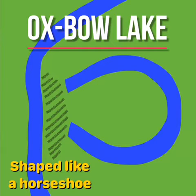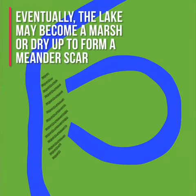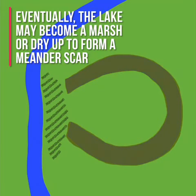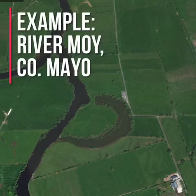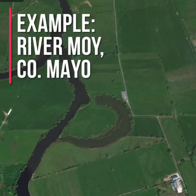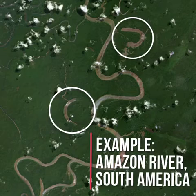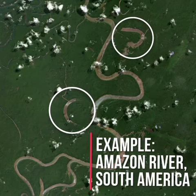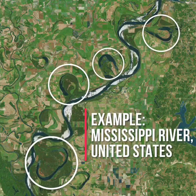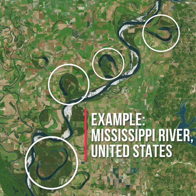The oxbow lake forms in the shape of a horseshoe. Eventually it may turn into a marsh or may dry up completely to form a meander scar. An example of an oxbow lake can be seen in the River Moy in County Mayo. Oxbow lakes can also be seen in the Amazon River in South America and on the floodplain of the Mississippi River in the United States.